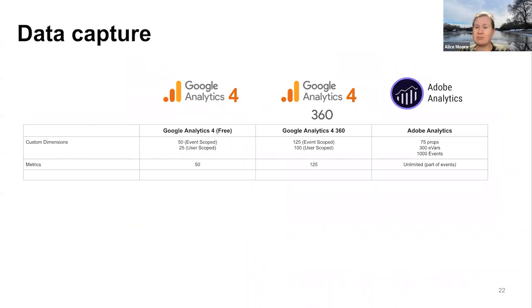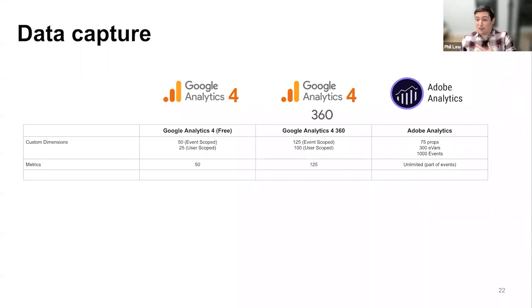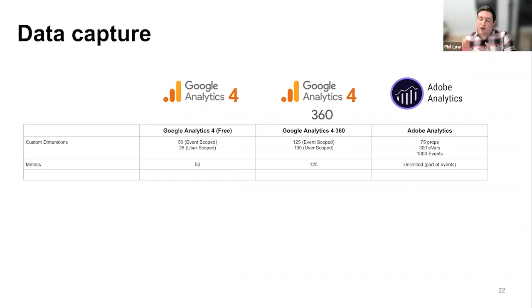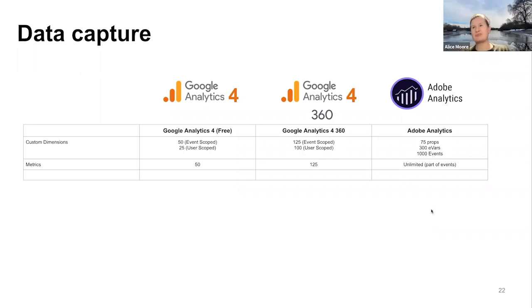On the numbers side: Adobe traditionally has 75 props, 300 eVars, and 1,000 events. If you used all of them, you'd be a crazy person — there's no way you could possibly use all of them. But you know you're not going to hit any limits. Metrics are unlimited as well. Props are effectively standard dimensions, eVars are where you can do the fancy allocation things, and events are the number of times something happened — like add to cart.